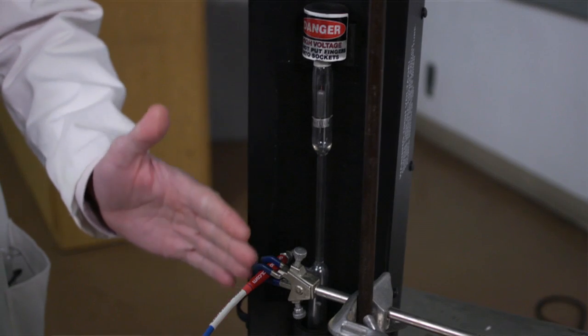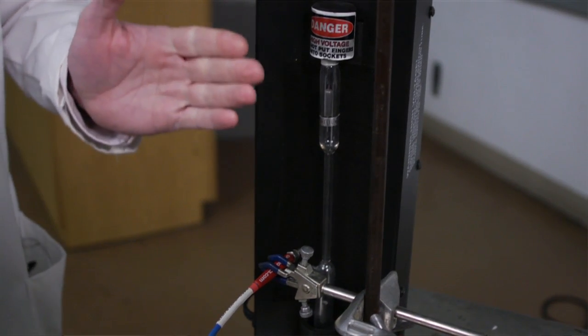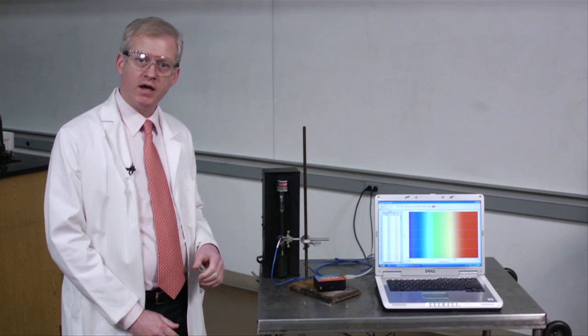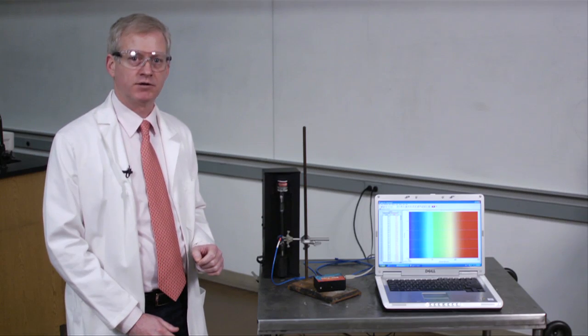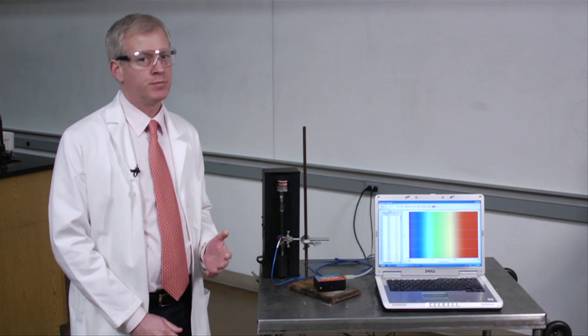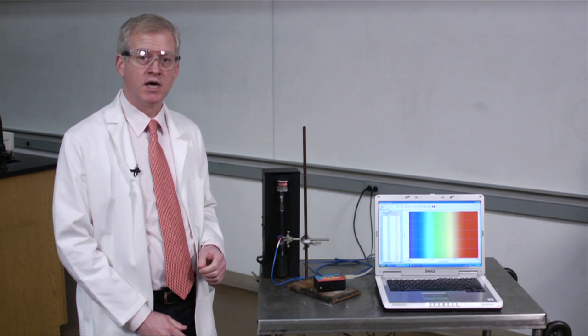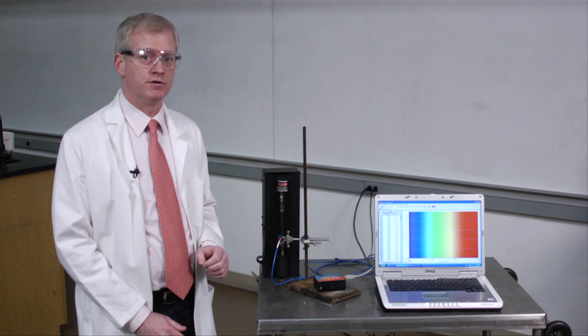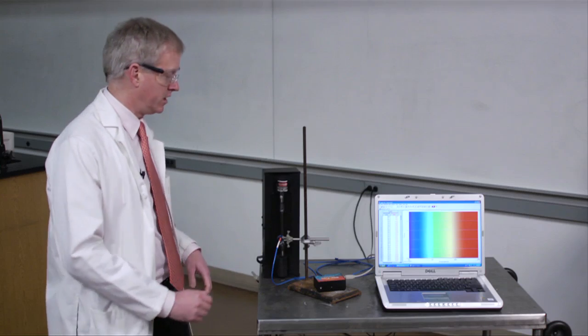In the following demonstration, I want to illustrate the quantization of the electronic energy levels of the hydrogen atom. Here, we have a gas discharge tube filled with hydrogen gas at very low pressure. When we apply a high voltage to the gas, we cause current to flow by ionizing electrons from the atoms. In the process, many atoms of hydrogen are generated in excited electronic states, and we can observe light that is emitted by those atoms as they transition from one state to another that is lower in energy.